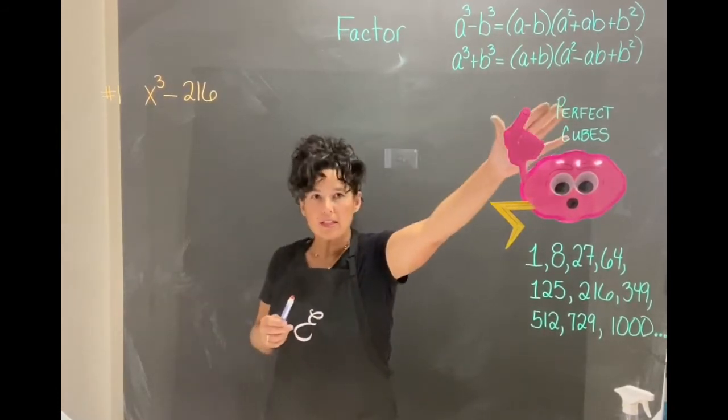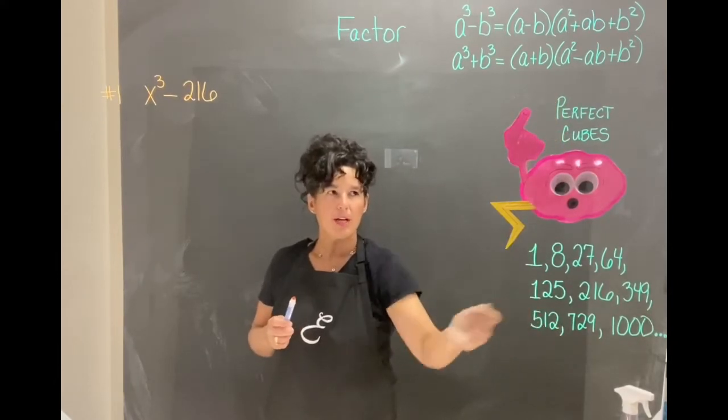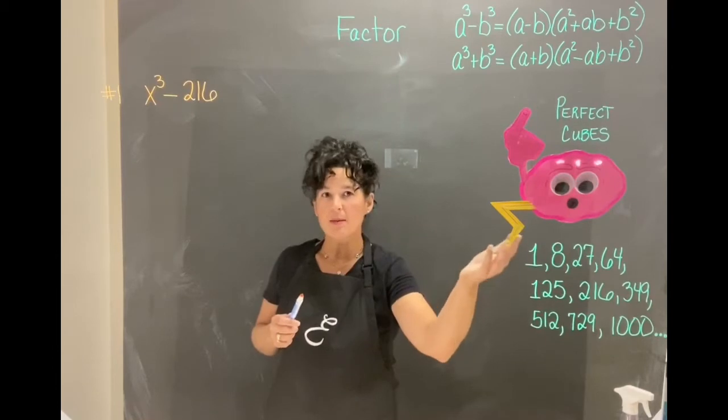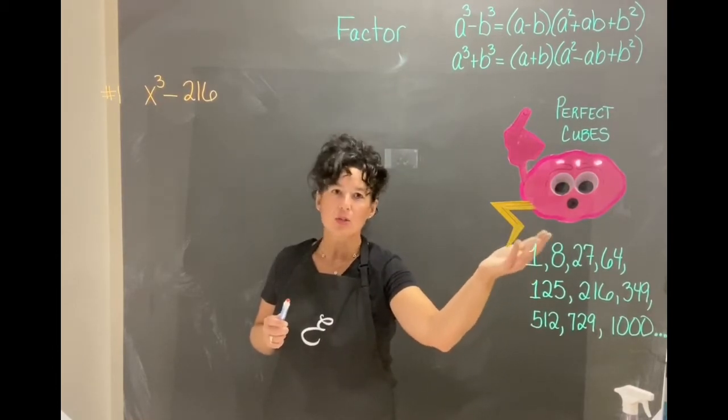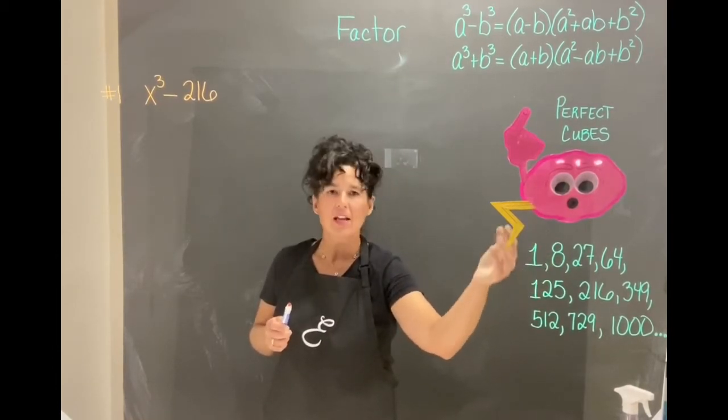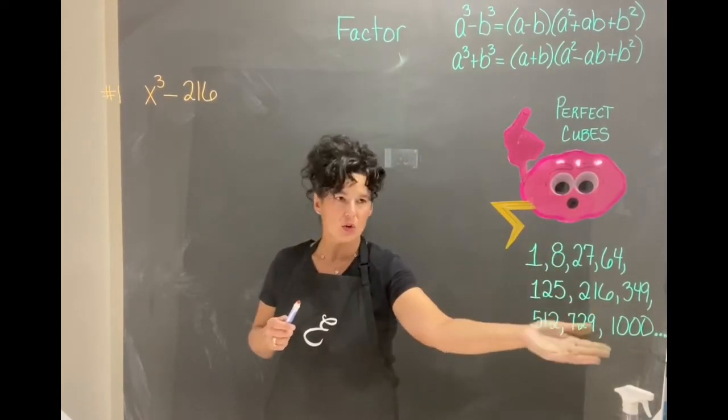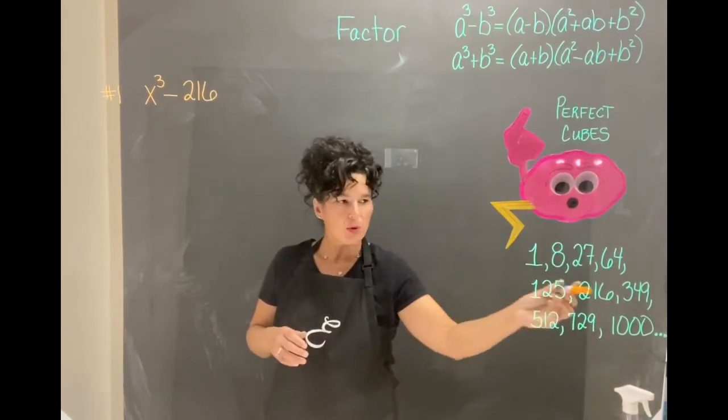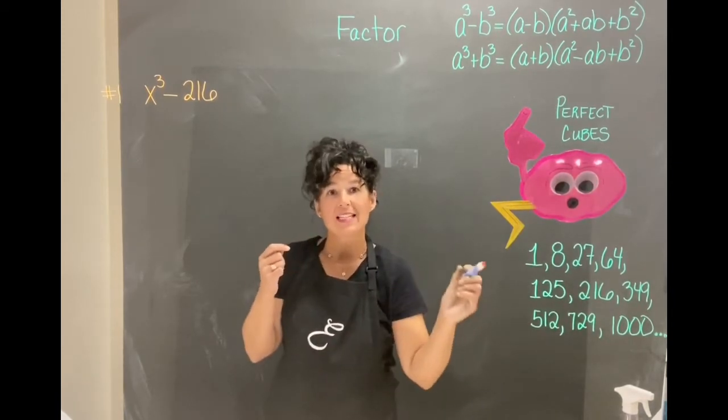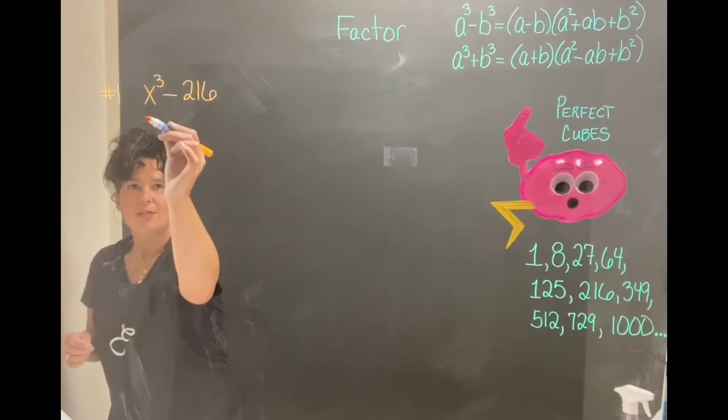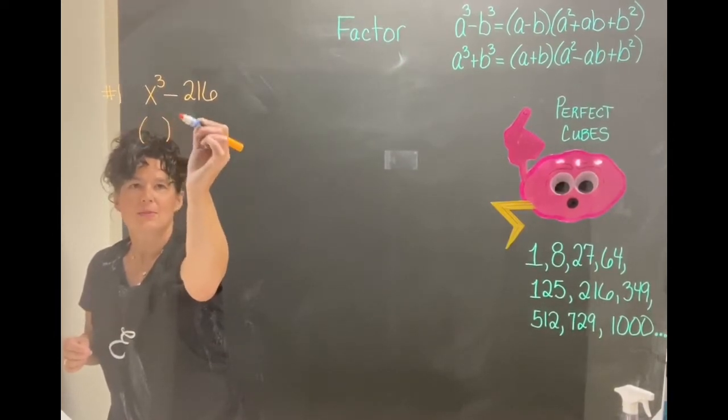I wrote our formulas here and then I've also brainstormed the first few perfect cubes. 1 times 1 times 1 is 1, 2 times 2 times 2 is 8, 3 times 3 times 3 is 27 and so forth. And I only wrote out up through 10 times 10 times 10. So let's just emphasize what is it that's being cubed?